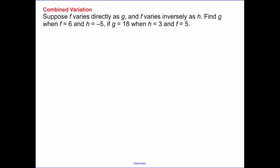Now we have a combined variation. Suppose f varies directly as g. So f is going to vary in some constant directly as g, g goes on top and f varies inversely as h. Find g when f equals 6 and h equals 5 if g equals 18 when h equals 3 and f equals 5. So this if part is what you need to start with to find your constant of variation, because they've given me each one of my variables.